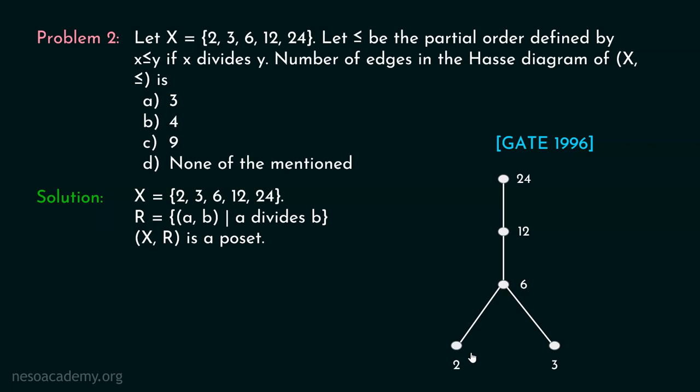Now we calculate the number of edges in this Hasse diagram. There are a total of 4 edges: edge 1 (2–6), edge 2 (3–6), edge 3 (6–12), and edge 4 (12–24). Therefore, there are 4 edges in the Hasse diagram, and option B (4) is the correct answer. Thank you for watching this presentation.